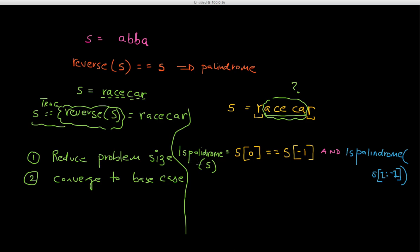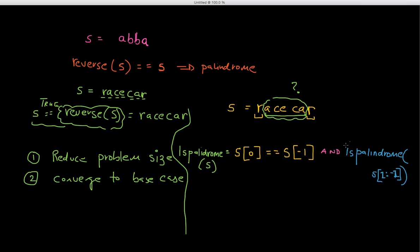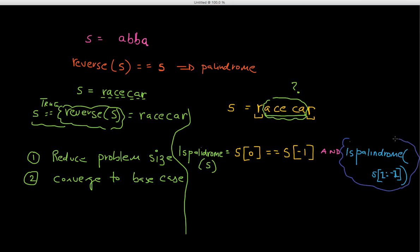Look at this clarity — it's so simple. My original problem is 'is my string s a palindrome?' The implementation reduces to a smaller problem. If the original string s has length n, the recursive call works on a substring of length n minus 2. My problem size is getting reduced — this is the first key idea of recursion.